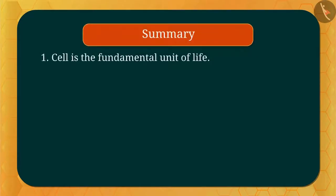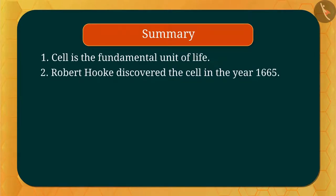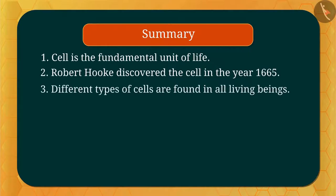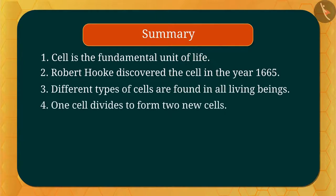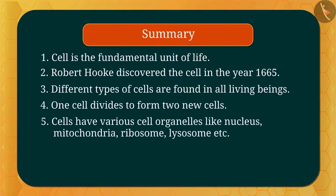So what did we learn in this video? Cell is the fundamental unit of life. Robert Hooke discovered the cell in 1665. Different types of cells are found in all living beings. One cell divides to form two new cells. Cells have various organelles like nucleus, mitochondria, ribosome, lysosome, etc. Next, we will learn about cell envelope and osmosis.